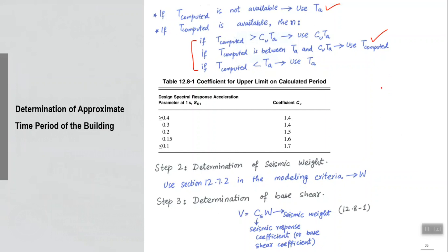For example, I calculate the approximate time period from the empirical expression, and let's say it comes out to be 0.1 second. Then I run the modal analysis and I came to know that the actual time period is 0.5 second. If T computed is available, then I will go to the upper limit because it is already greater than my Ta. I will calculate Cu Ta, and Cu I will pick from this table 12.8-1, and based on the SD1 value, I will pick the modifier.